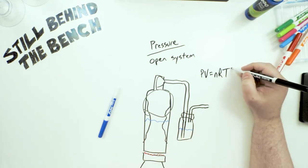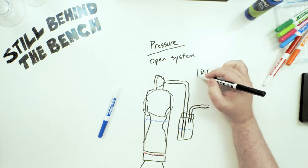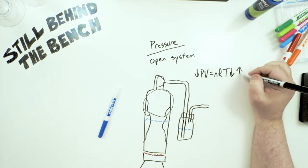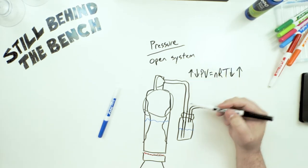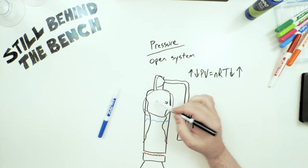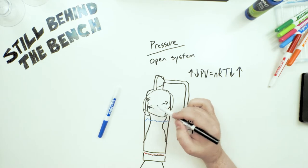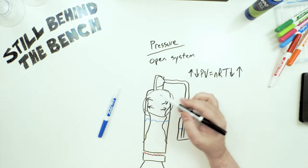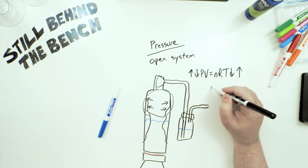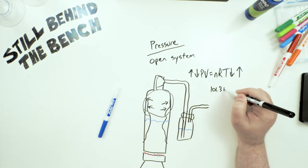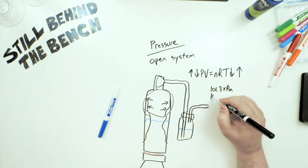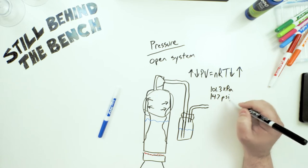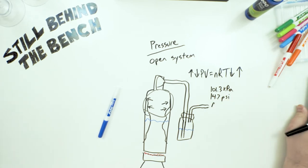And once that vapor that is still here cools, the pressure is going to drop because of the formula PV equals nRT. So you cut off the heating, and when temperature drops, pressure drops. When temperature goes up, pressure goes up. So the temperature was dropping, pressure was dropping, and the outward force from the vapor inside has to drop.